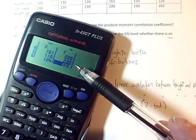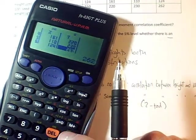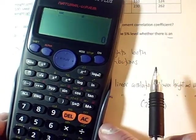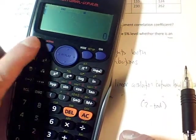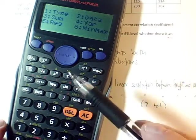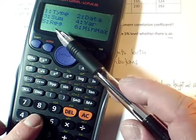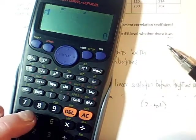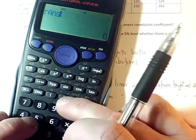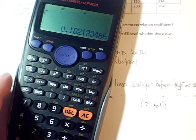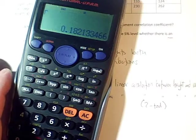So there's my calculator with the data entered. I press AC to get off that screen, I do enter stats mode by doing shift and pressing the 1 key, and then I want regression, so I want 5, that's correlation and regression, and there's my R value. Number 3, whoops, not answer. So R is just 0.1821.